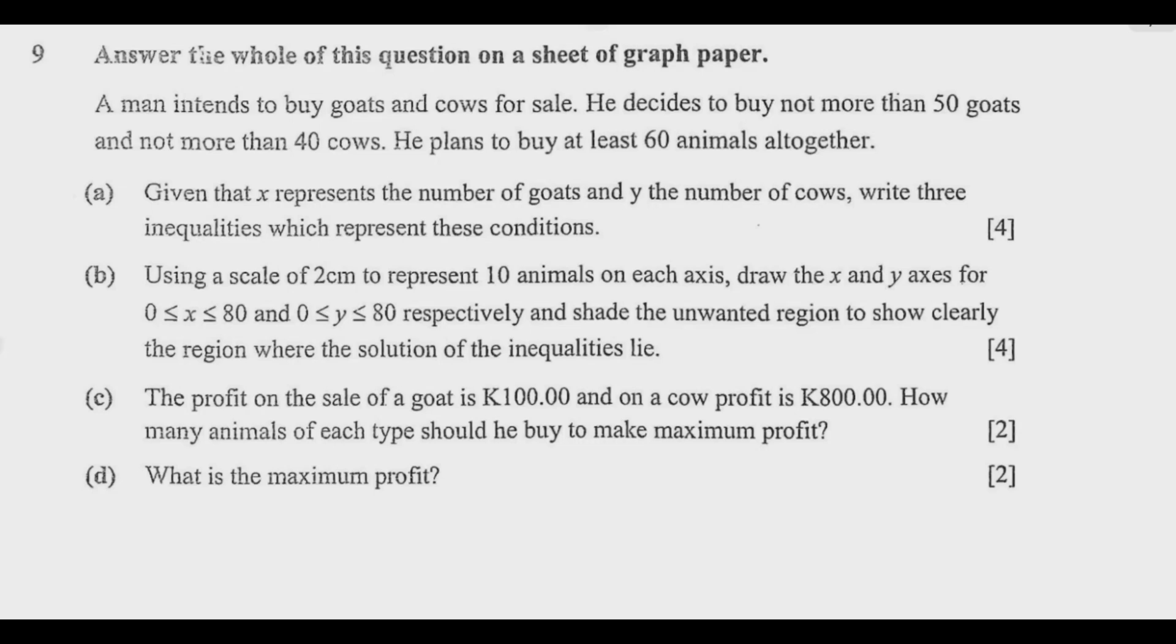Let us start with question A. We've been guided already that x represents the number of goats and y represents the number of cows. We are required to write three inequalities. Let us learn from the information that has been given. A man intends to buy goats and cows for sale. He decides to buy not more than 50 goats, so the maximum number of goats are 50 you can buy.